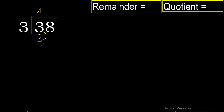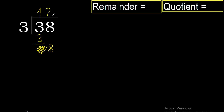3 minus 3 is 0. Bring down 8. Now with 8: 3 multiplied by 3 is 9 — excessive. 3 multiplied by 2 is 6, which is the closest.